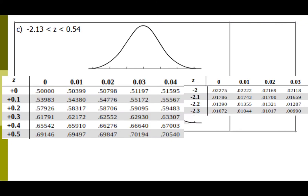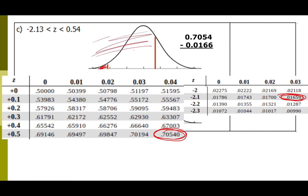Sometimes we want the area between two z-scores — a little less than two standard deviations below and about half a standard deviation above the mean. We find negative 2.13, which gives an area, and positive 0.54, which gives 0.7054. Because I want just the middle part, I subtract: 0.7054 minus 0.0166 gives 0.6888. To find the middle, subtract the right value minus the left value.